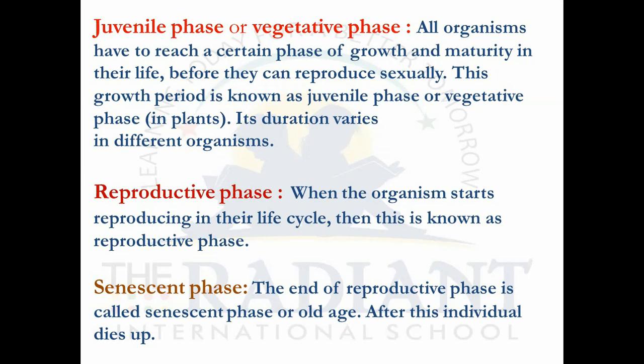Once flowering starts, the reproductive phase of the plant begins. So the juvenile phase is a pre-reproductive phase. The second is the reproductive phase — when the organism starts reproducing in its life cycle. In humans, at puberty males and females start producing gametes, attaining maturity of the reproductive phase. In plants, it begins with the production of flowers — flowering is the sign of the beginning of the plant's reproductive phase. The third is the senescent phase, or old phase — the end of the reproductive phase — after which the individual dies.